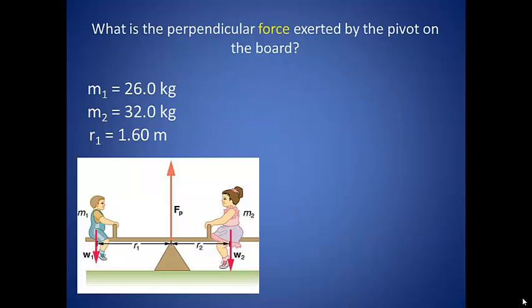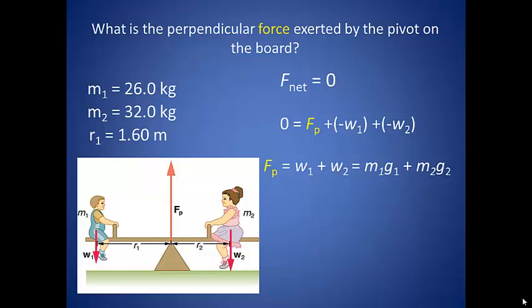So then what is the perpendicular force exerted by the pivot on the board? Remember that one condition for equilibrium is a net force of zero, which is the sum of all the forces acting on our system. It is pretty straightforward then that the upward force of the pivot will be equal to the sum of all of the downward forces acting on the board. Again, we have all the information and just need to plug in those numbers, and we get 568 newtons of force.